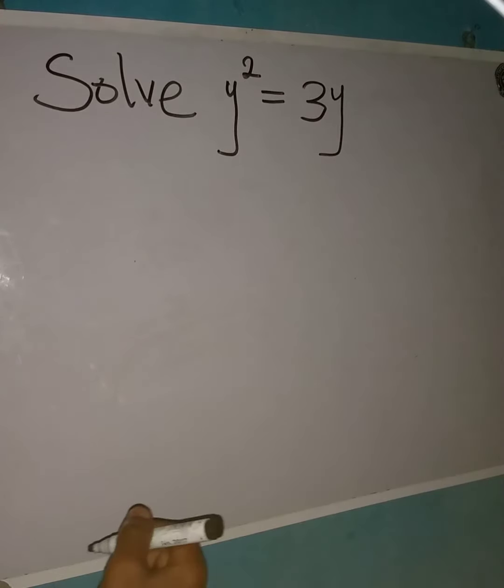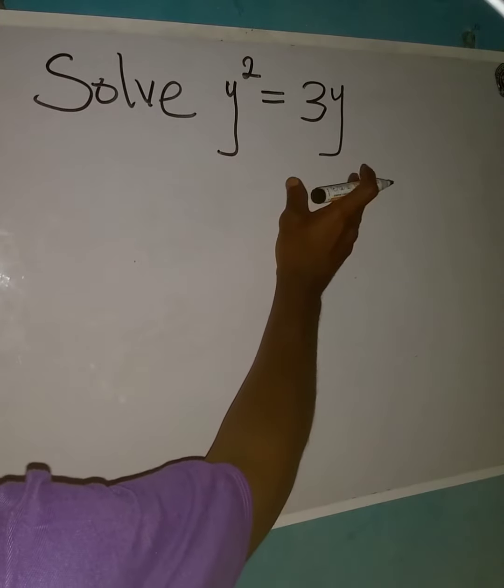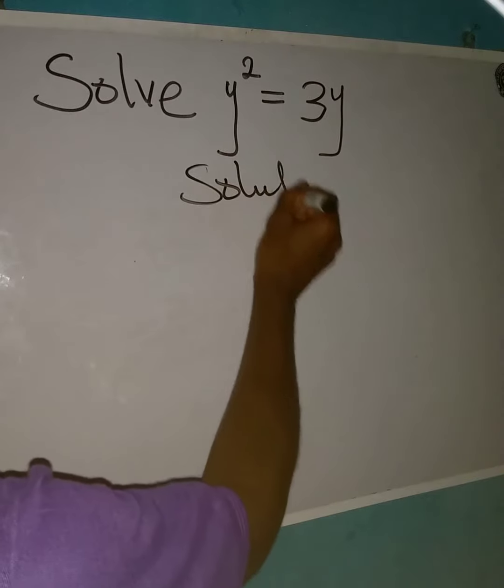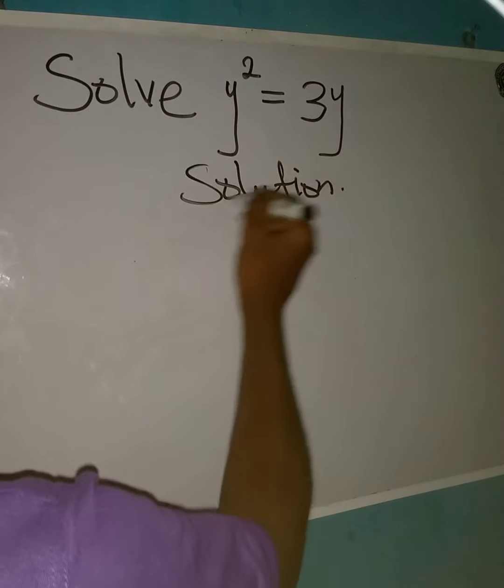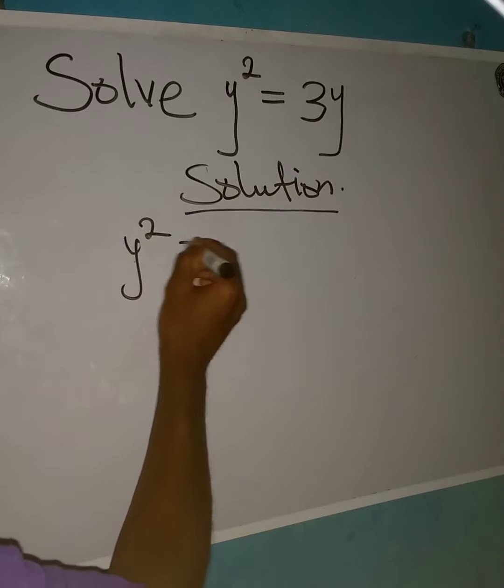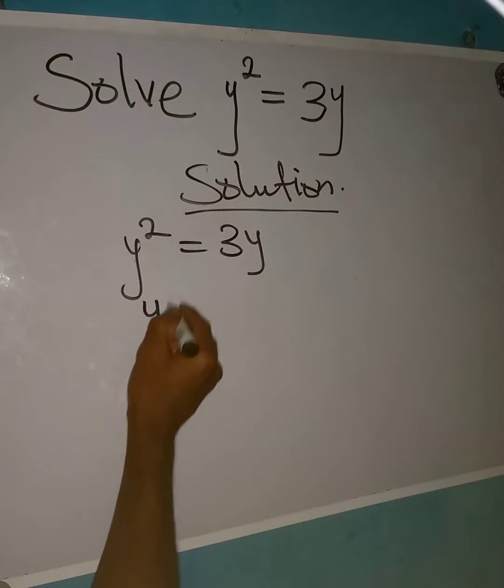Hello everyone, let us solve this quadratic equation. We have y squared equal to 3y. So we have y squared is equal to 3y. Now we will collect like terms to have y squared minus 3y.